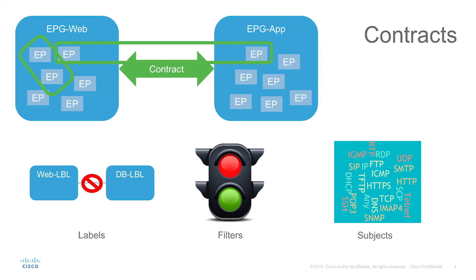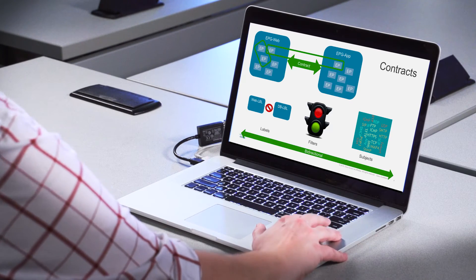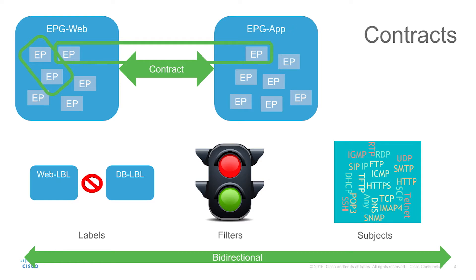Filters specify allow or deny — though in most cases it will be allow because of that whitelist model. The subject is simply the kind of traffic that will be allowed. While this does look a lot like an ACL, it's really much easier to implement and keep track of. One of the main problems with ACLs and firewall rules is that we lose track of them and everyone's too scared to delete them in case they're actually doing something — the maintenance is hard. Contracts help with this and can be easily made bidirectional with the click of a button, though they can be unidirectional if you like.